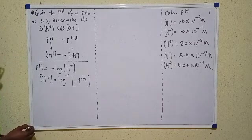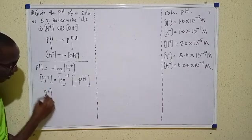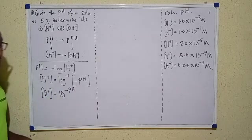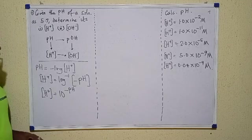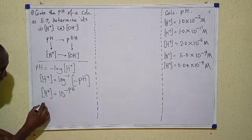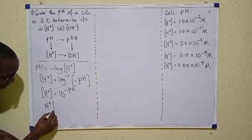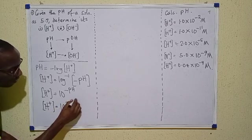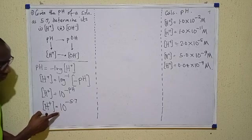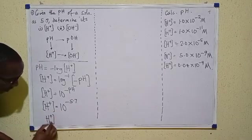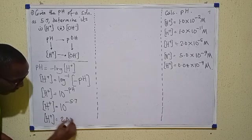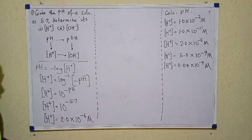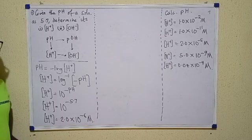This is one way of writing it, but alternatively I could write H⁺ equals 10 raised to the power of negative pH — both expressions are the same. Substituting the pH immediately, H⁺ concentration equals 10 raised to the power of negative 5.7. If you do this with a calculator you get H⁺ as approximately 2.0 × 10⁻⁶.